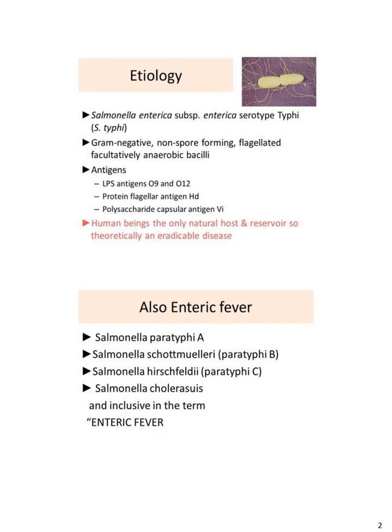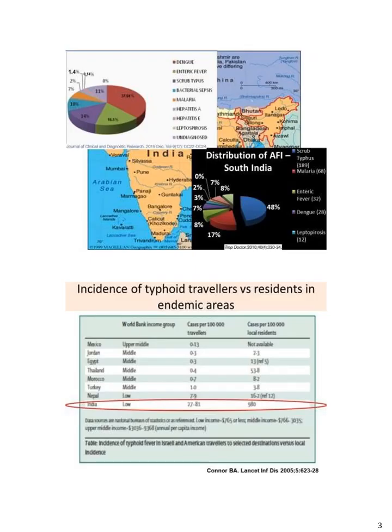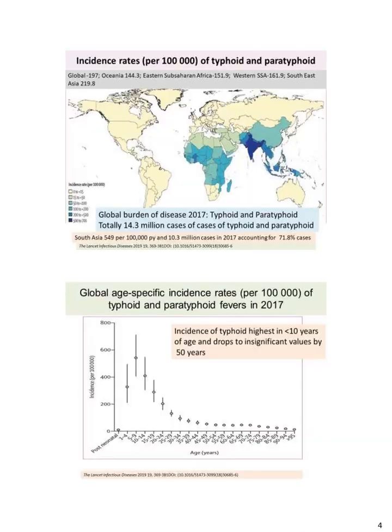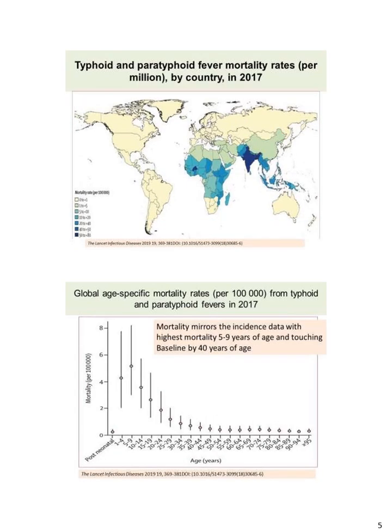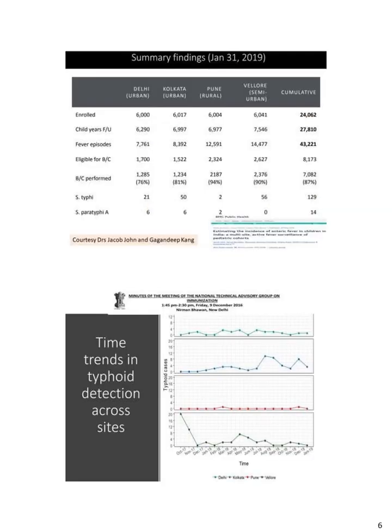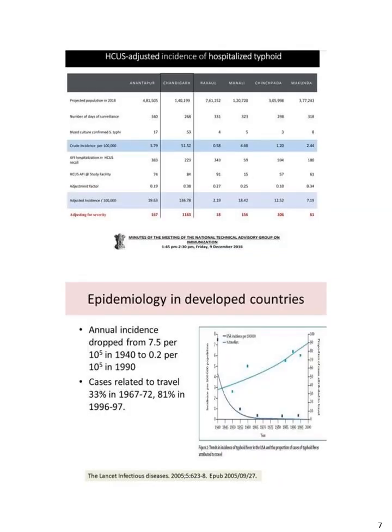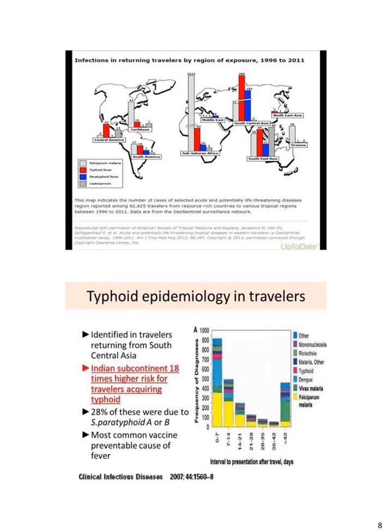Theoretically it is an anthroponotic infection. It has worldwide distribution. Incidence of paratyphoid is increasing, while annual incidence in developed countries has dropped. It is increasingly being reported from travelers returning from South Central Asia, and the Indian subcontinent poses 18 times higher risk for travelers.